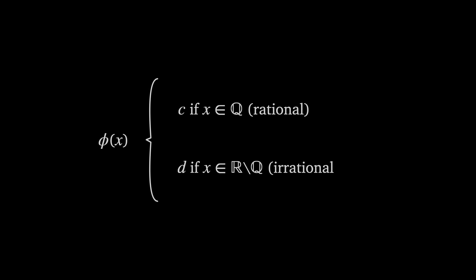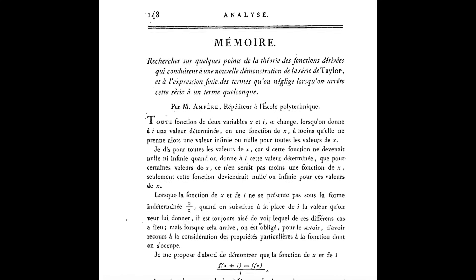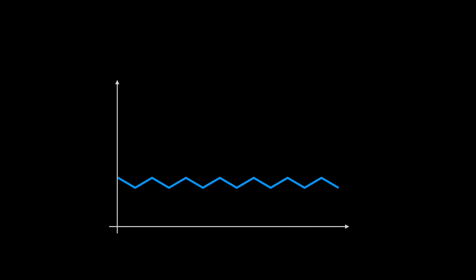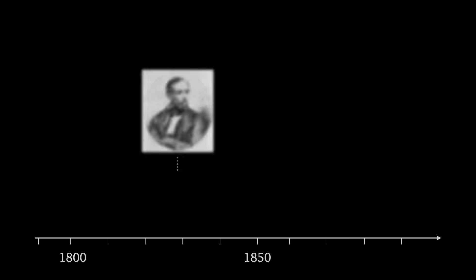But many prominent mathematicians thought that a continuous function must be differentiable at least at some points. In fact, Ampere wrote a paper in 1806 arguing that a continuous function must be differentiable everywhere except at certain isolated points. The reason people thought this is because however many non-differentiable points you introduce into a function, you would always imagine a differentiable part connecting them. It's difficult to imagine that if every point was non-differentiable, how the function could still be continuous. For a few decades following Dirichlet's discovery of a nowhere-continuous function, no one had found a nowhere-differentiable function.